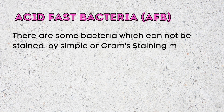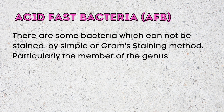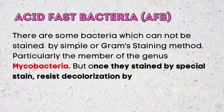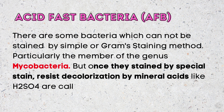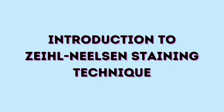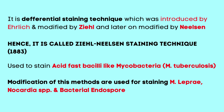Acid-fast bacteria are bacteria which cannot be stained easily by simple or gram staining, particularly members of the genus Mycobacteria. But once stained by the special stain, they resist decolorization by mineral acids like sulfuric acid — hence they are called acid-fast bacteria, or acid-fast bacilli. This method was originally introduced by Ehrlich as a differential staining technique. It was later modified by Ziehl and then by Neelsen, and hence it is called the Ziehl-Neelsen staining technique.